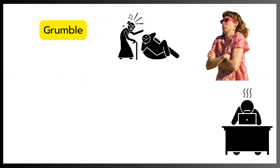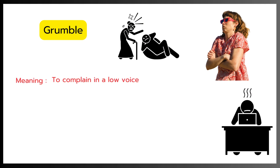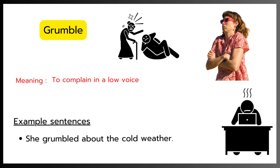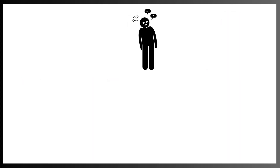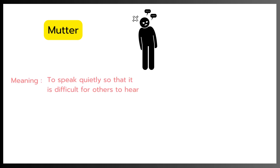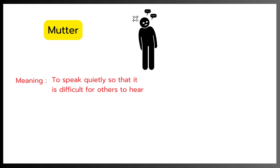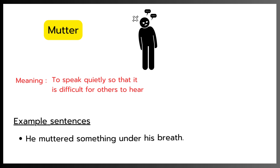Grumble. Meaning: To complain in a low voice. Example: She grumbled about the cold weather. Mutter. Meaning: To speak quietly so that it is difficult for others to hear. Example: He muttered something under his breath.